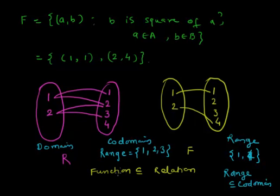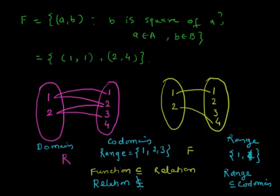For a function, all elements of the domain set should have only one image in the co-domain set. Here, 1 is mapped to 1 and 2 is mapped to 4 in the function. But in the relation, 1 is having two images, so it is no longer a function. Every function can be a relation, but every relation is not necessarily a function — this is the key difference between a relation and a function.